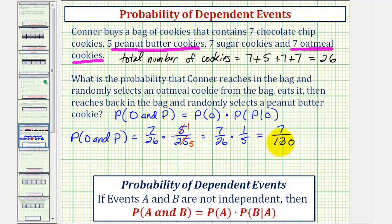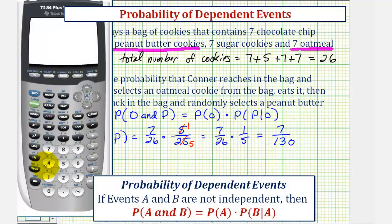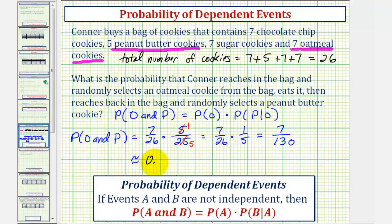But probability can also be expressed as a decimal and a percentage, so let's also find those. To convert the fraction to a decimal we'll divide, we would have 7 divided by 130. Let's round to four decimal places, and therefore this is approximately 0.0538. Notice how the 4 indicates to round down. So this is also approximately 0.0538. Converting to a percentage, we would multiply by 100 and add a percent sign, which would be 5.38 percent.